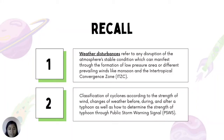You have learned in the previous lesson that weather disturbances refer to any disruption of the atmosphere's stable condition, which can manifest through the formation of low-pressure area or different prevailing winds like monsoon and the intertropical convergence zone. You have also learned the classification of cyclones according to the strength of wind, changes of weather before, during, and after a typhoon, as well as how to determine the strength of typhoon through public storm warning signal.